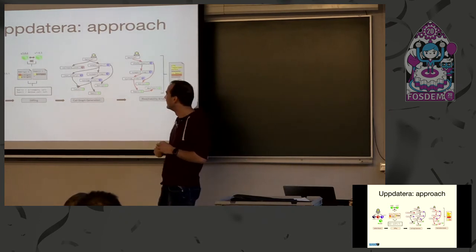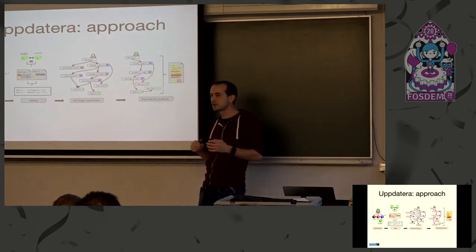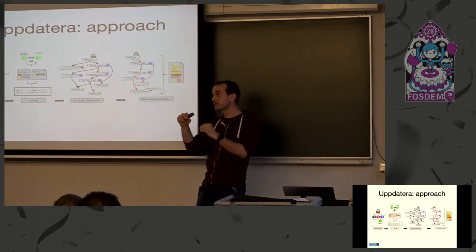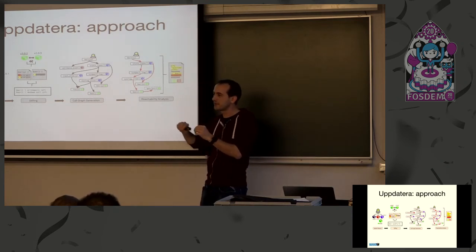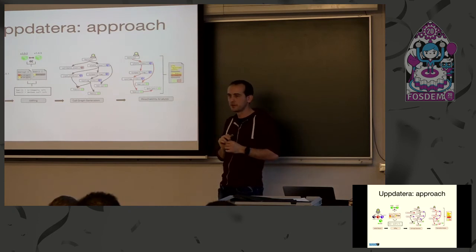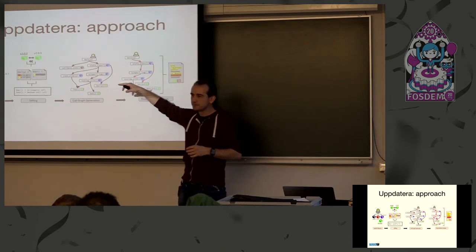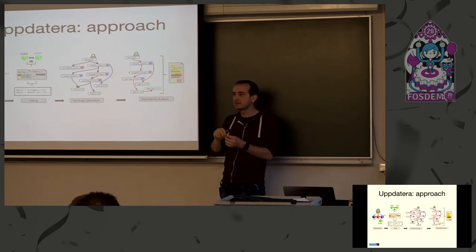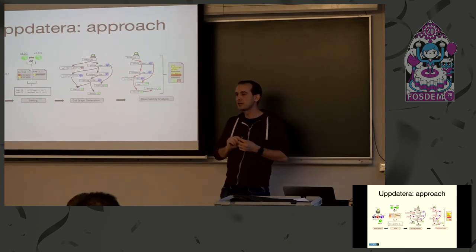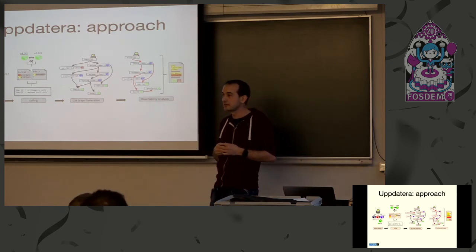What we do instead is take two dependency versions and perform a source-level AST diff using a tool called Spoon. Spoon gives us a precise list of changes at the function level — for example, 'if-statement changed the condition from x to z.' We then build call graphs and check whether, from the functions in our project, there is a direct path back to the changed functions in the updated dependency. This is essentially a reachability analysis.